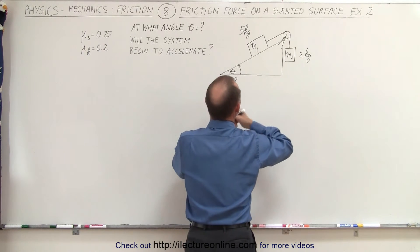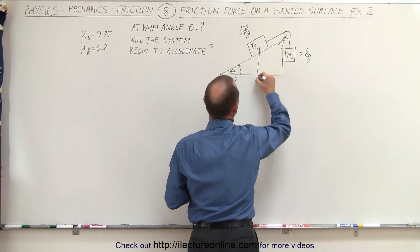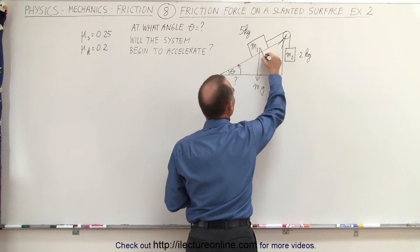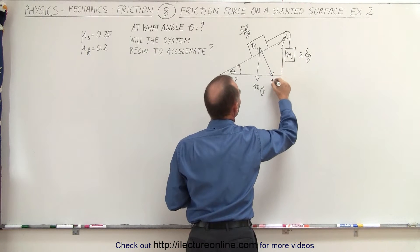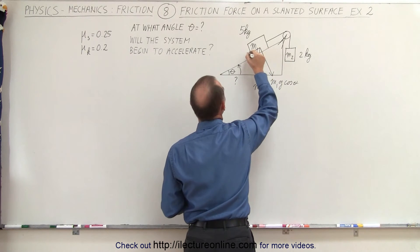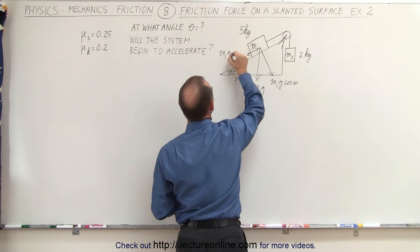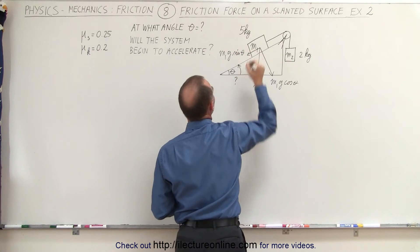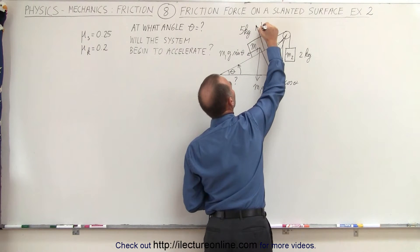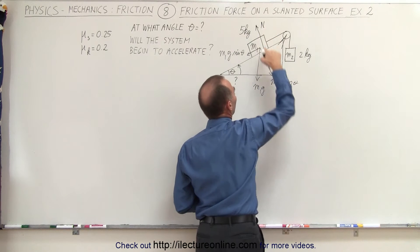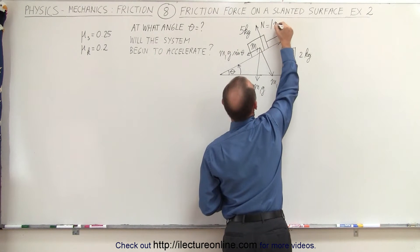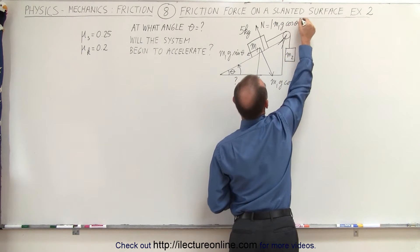Starting out with the weight of block 1, we have M1g, which gives us two components: one that's perpendicular, M1g cosine of theta, and one that's parallel to the incline, M1g times the sine of theta. We also have the normal force — the surface pushing back — and the magnitude of the normal force is equal to the perpendicular component, so this is equal to M1g cosine of theta.